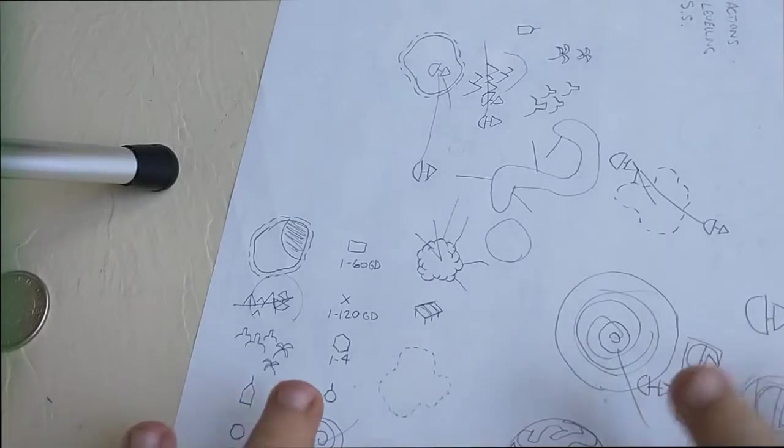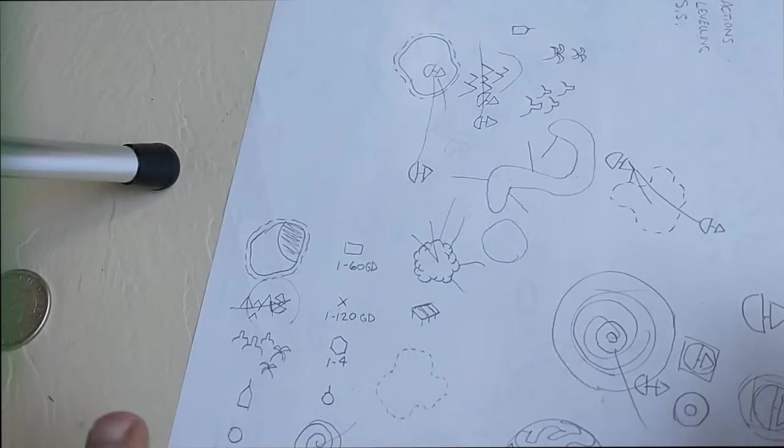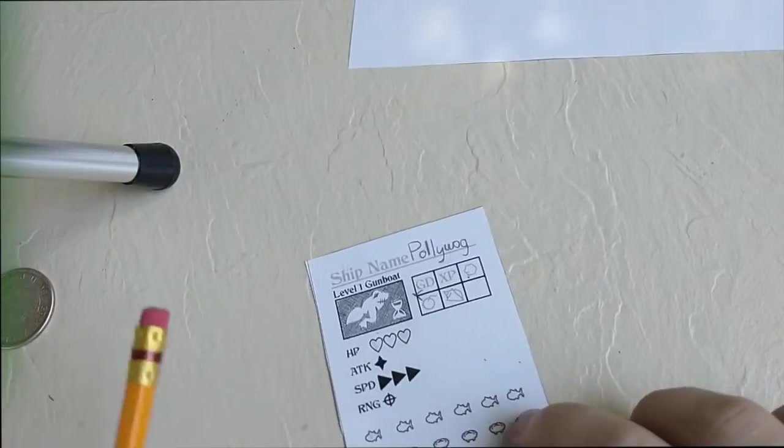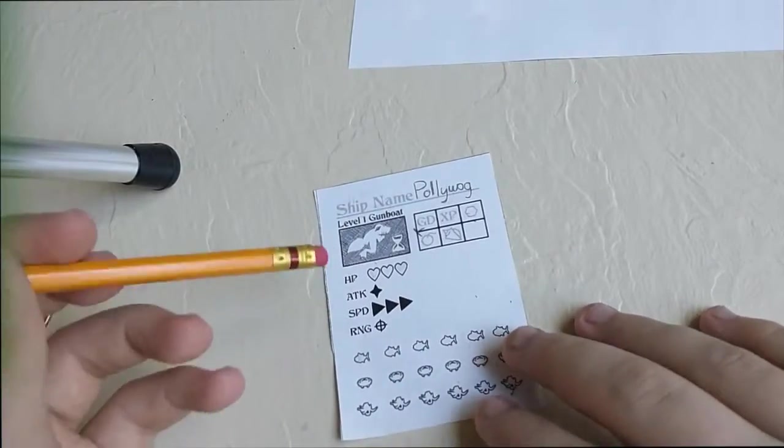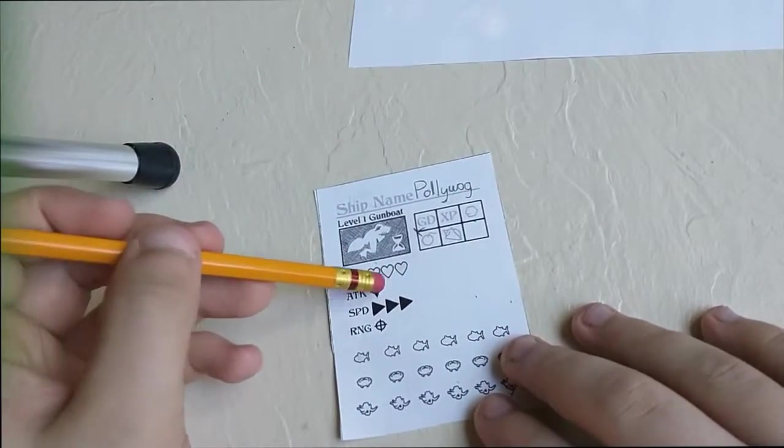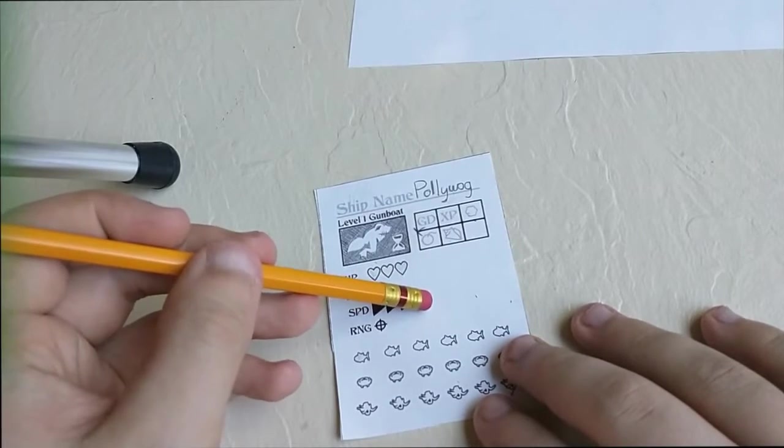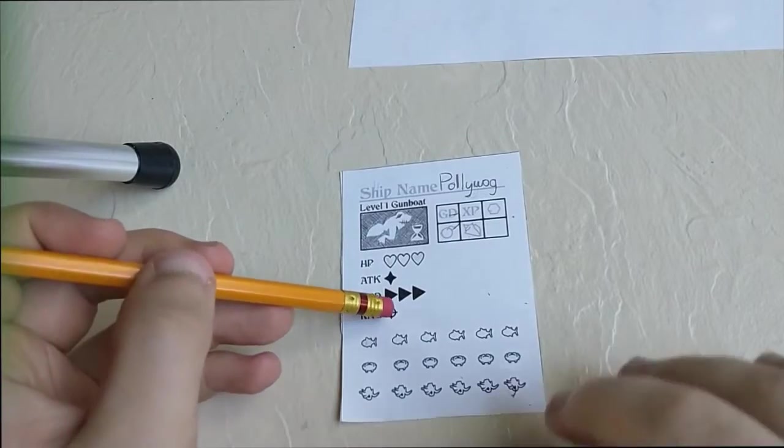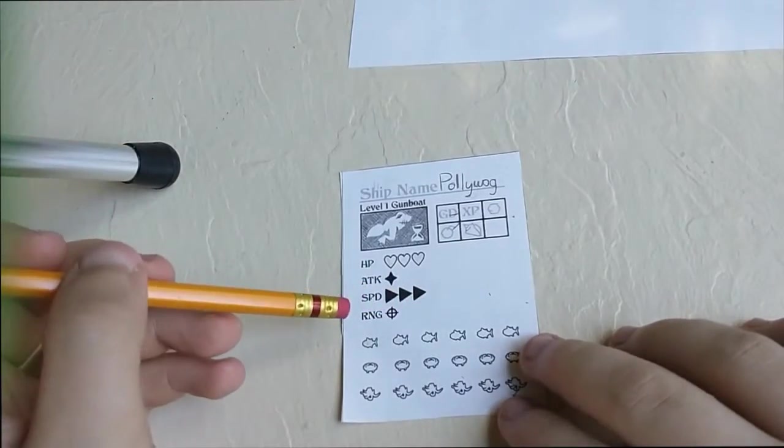So that's it. That's basically all you need to know about how to start playing flick the ship. So let's go through everything once more. You start out with a gunboat, you have three HP, one attack, three speed, you can flick three times to move, up to three times, you don't have to go the full three. And a range of one, so you can flick once to shoot.